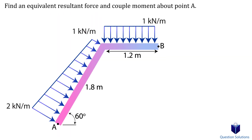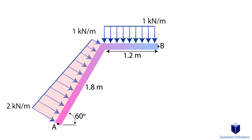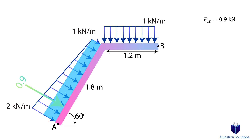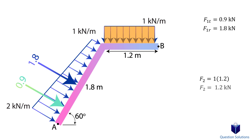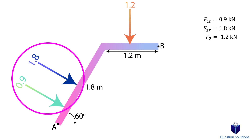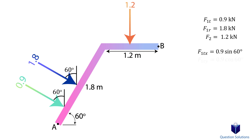Let's take a look at this problem, where we have to find an equivalent resultant force and a couple moment about point A. Unlike the previous question, we're going to show both the resultant force and the moment at point A. If we look at this distributed load, we can see that it's actually made up of a triangular piece and a rectangular piece. Let's start with the triangular piece: this part is 1 kN/m and the length is 1.8 meters. The location of this force would be one-third the length of the base. Notice how the two forces here are at an angle of 60 degrees, which means we need to break them into components.